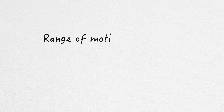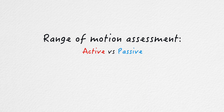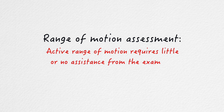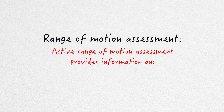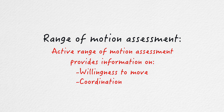When we assess range of motion it can be either active or passive. An assessment of active range of motion involves little or no assistance from the examiner to move the joint in the desired way. It provides information on a person's willingness to move, their coordination, their muscle strength, in addition to their joint range of motion.